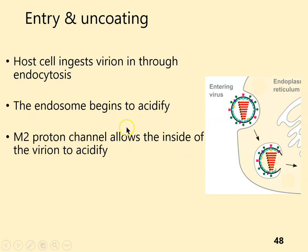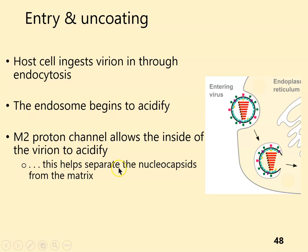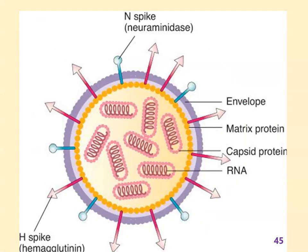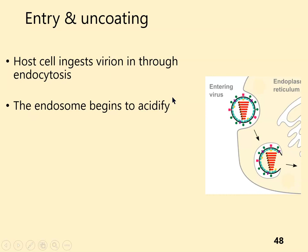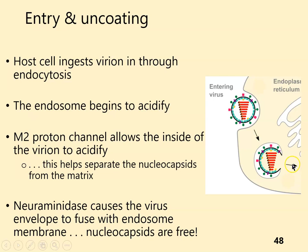One of the things the cell does is acidify the inside of those vesicles. Once that starts to happen, one of the envelope proteins — the M2 proton channel — allows protons from that acidifying endosome to get into the core. That acidifies the inside and helps separate the nucleocapsids from the matrix. That helps the virus uncoat and release the nucleocapsids. In this case, uncoating is mainly getting rid of the matrix, and that releases the nucleocapsids.